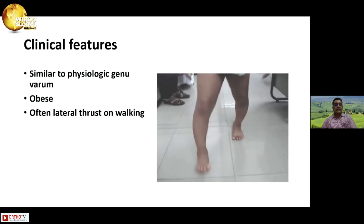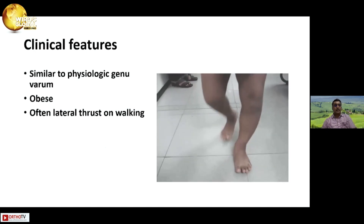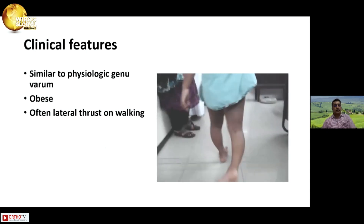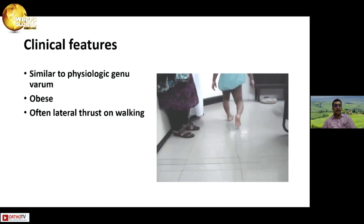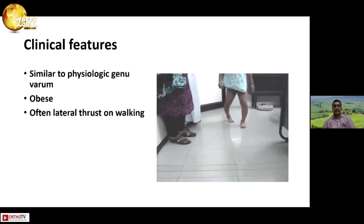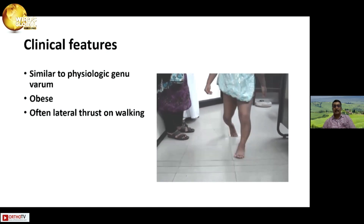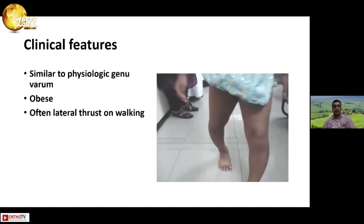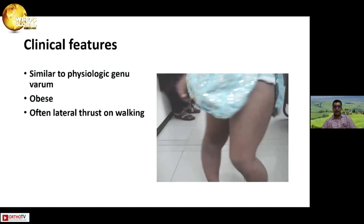The clinical features are a lot similar to physiological genu varum. Many of these children are obese, and when they walk they do have a lateral thrust on walking, as you can see in this picture.